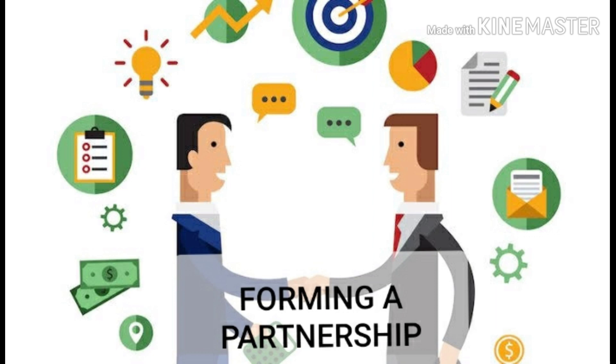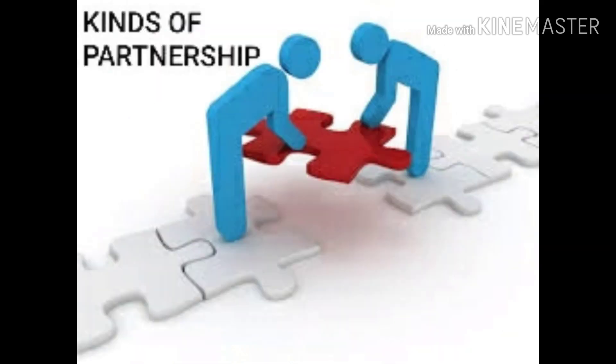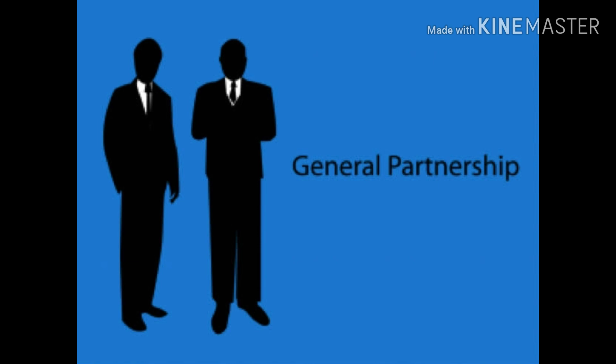So it makes sense to create a written document that states how certain situations are to be handled. Kinds of Partnership. There are three types of partnership. First, general partnership. In a general partnership, each partner shares equally in the workload, liability, and profit generated and paid out to the partners.